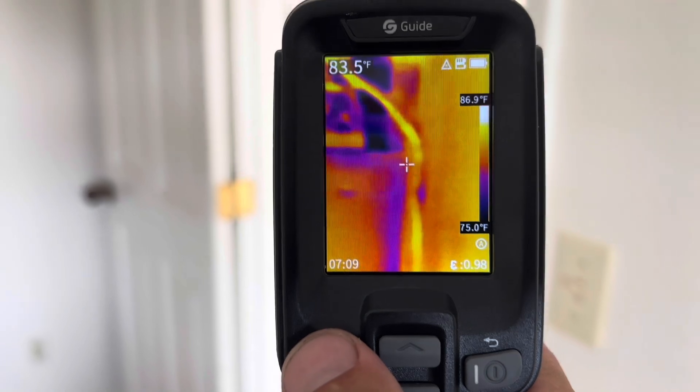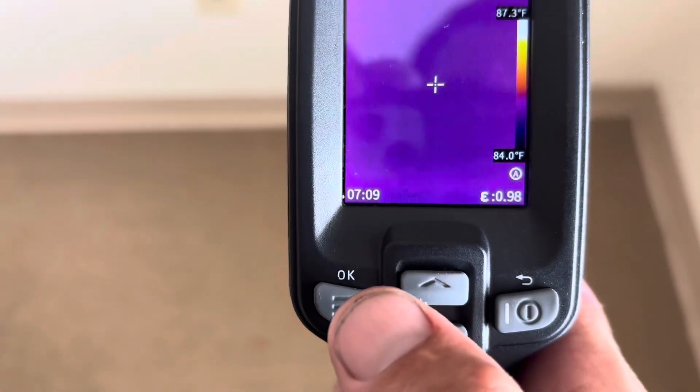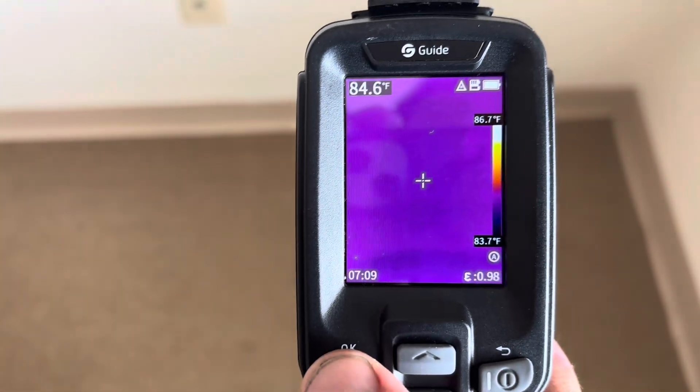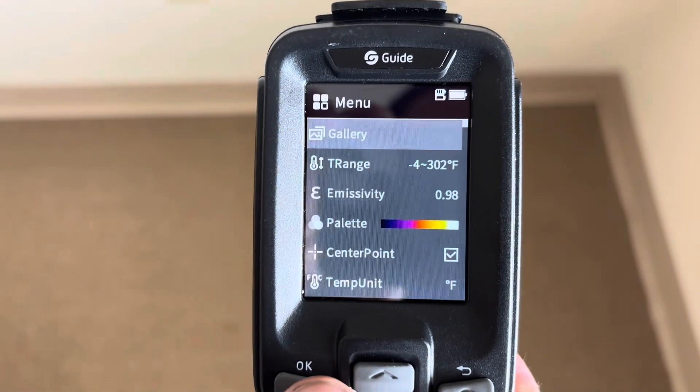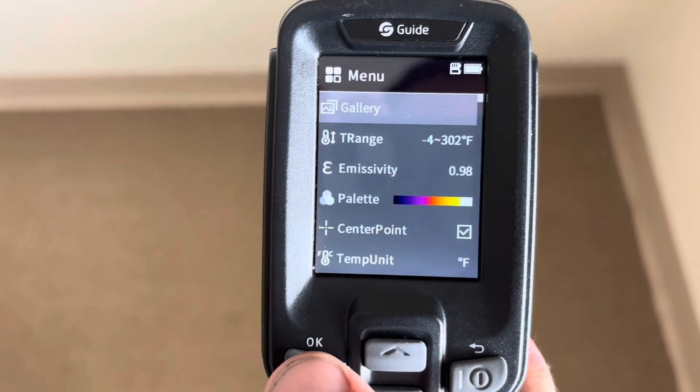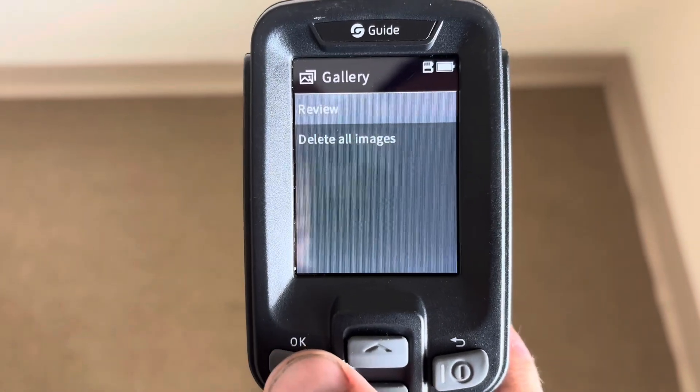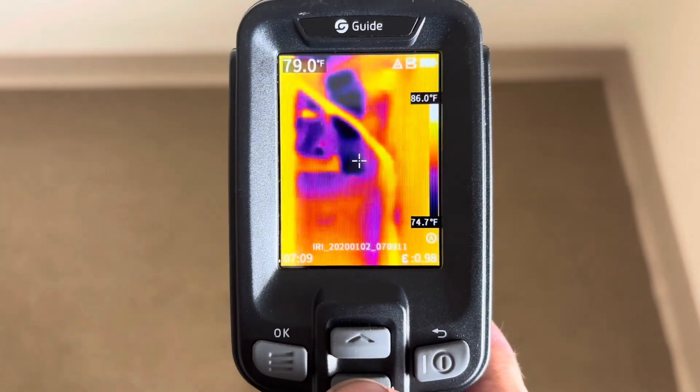Now we want to review our pictures on the device. We hit the OK button to get to our menu, and that's our very first option here - the gallery. So we hit OK there, review our images, and here they are.